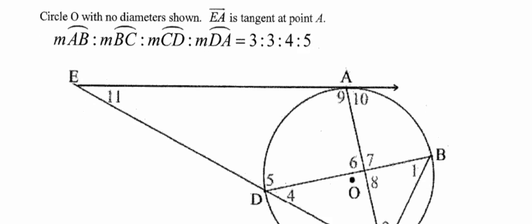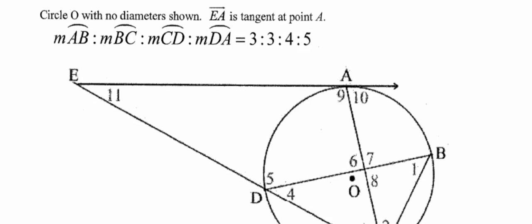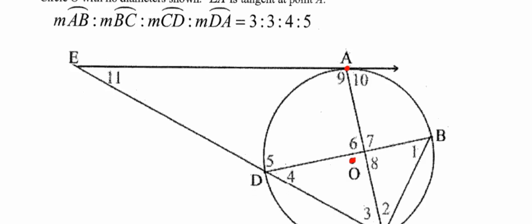We are given circle O with no diameters. We can tell that from the picture because we can see the center of the circle at point O and none of the chords pass through that center. Segment EA is tangent at point A — that line segment just barely touches the circle at one point. The ratio of arc AB to arc BC to arc CD to arc DA is equal to 3 to 3 to 4 to 5. Since we're not given the direct measures of any arcs or angles, I'll start by working with that ratio.